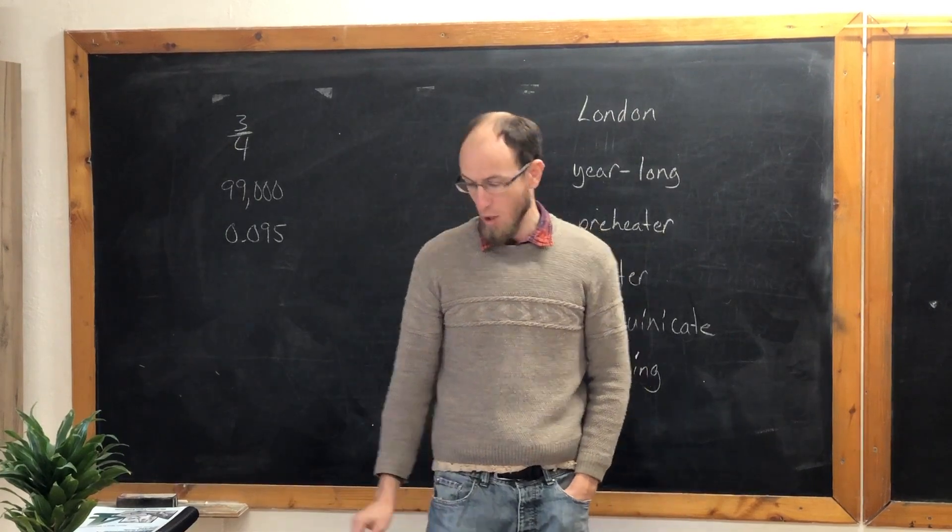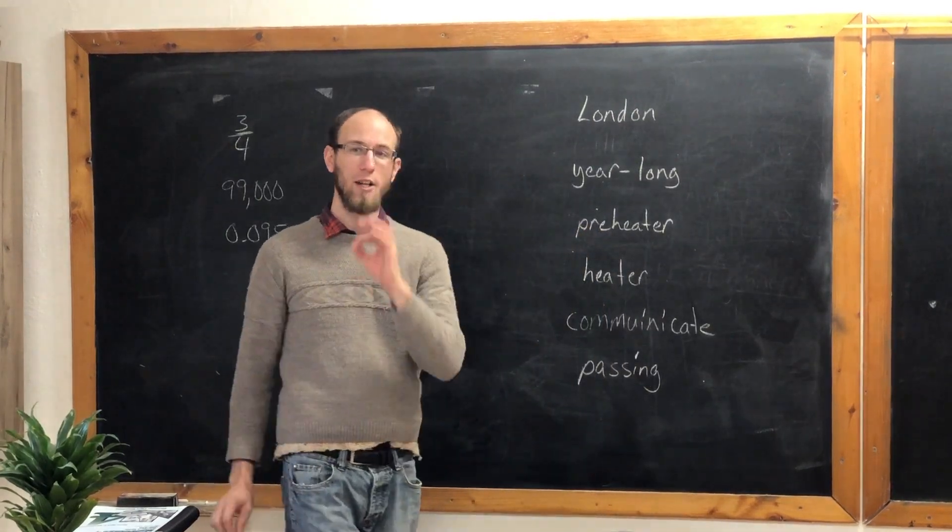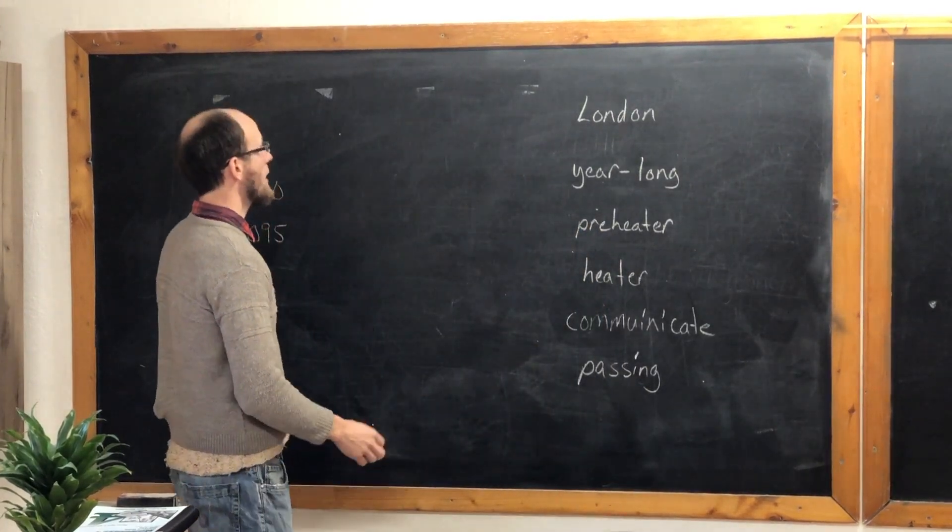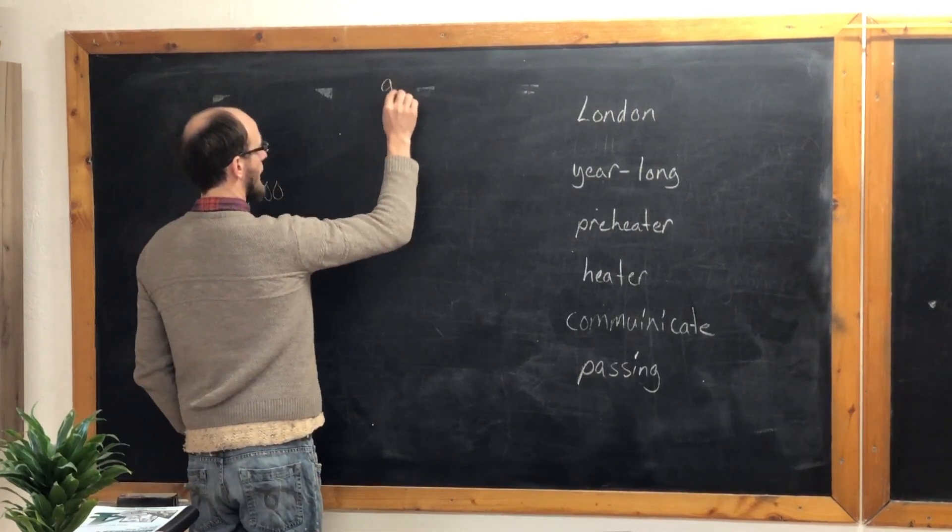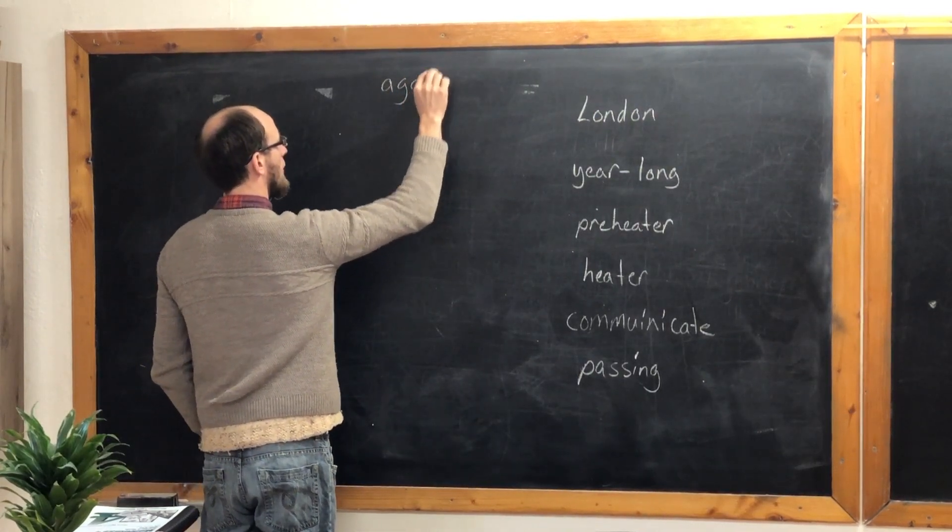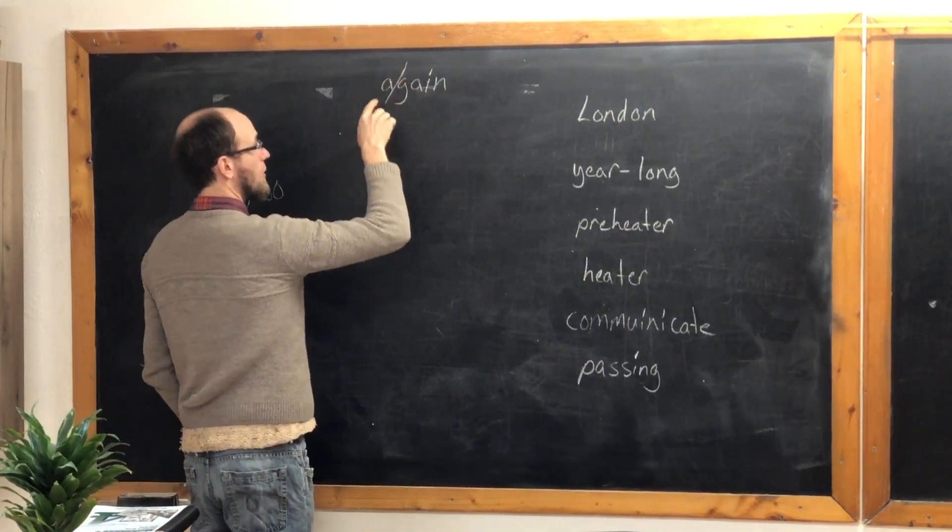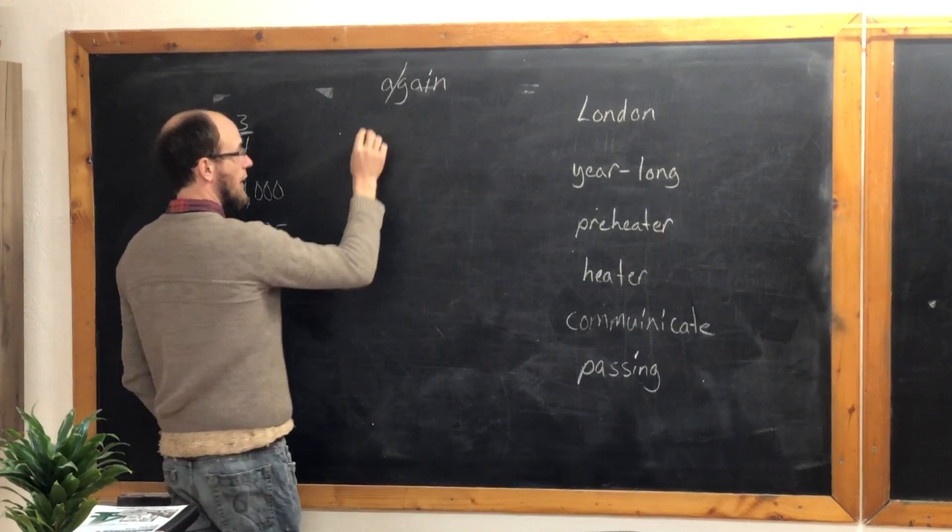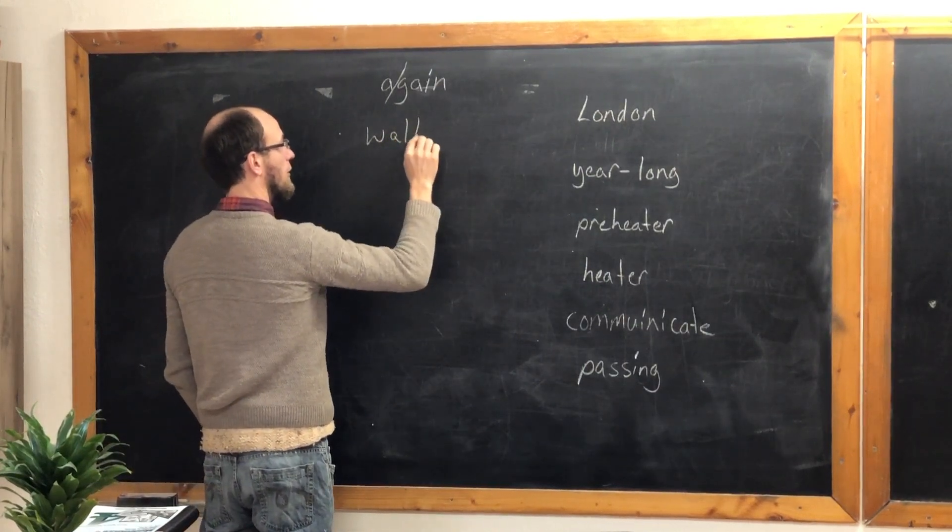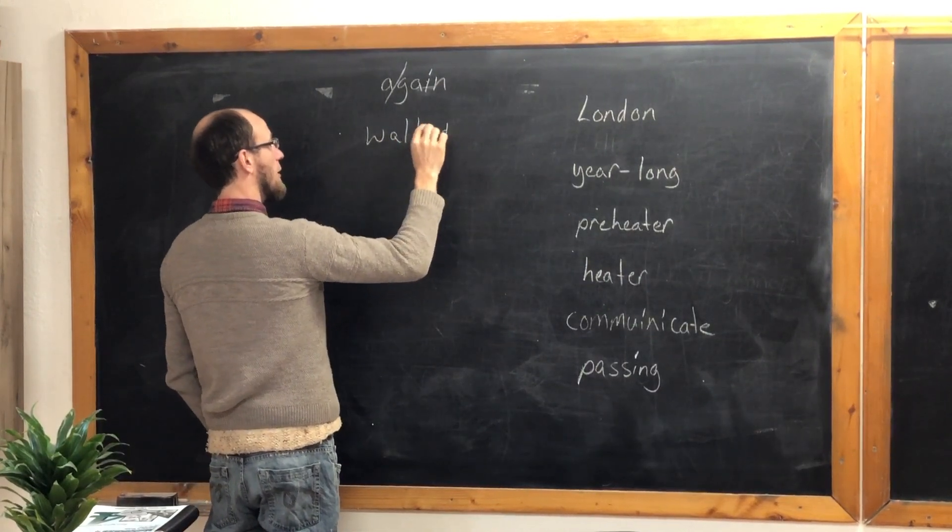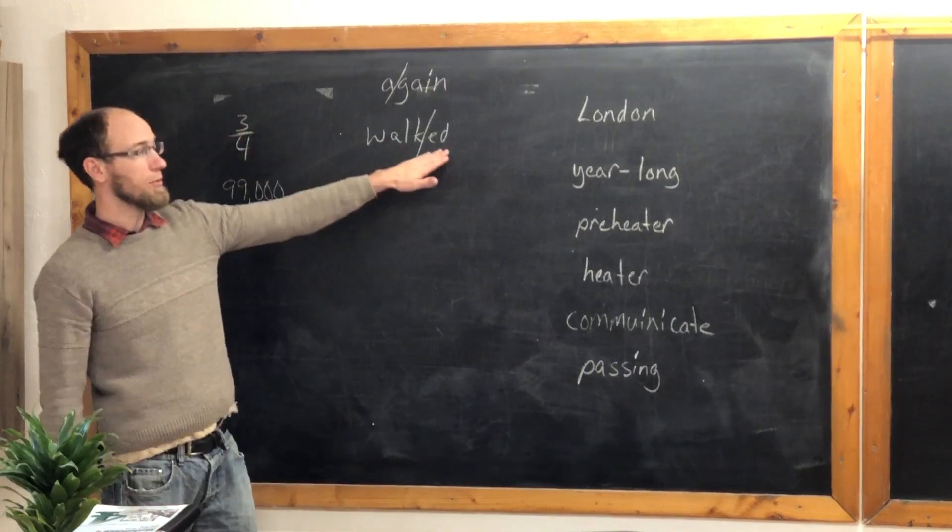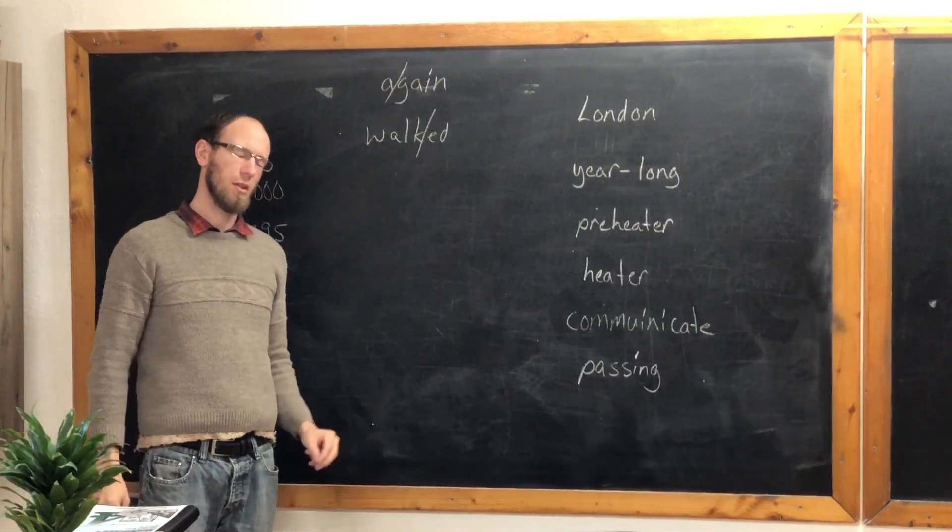Hyphen rules. We said already, when we divide words at the end of the line, can we divide the word again? No. At the end of the line? No, because if we would divide it, we would only let one syllable up there. Can we divide the word walked at the end of the line? No, because if we would divide it, we would only start with two letters.